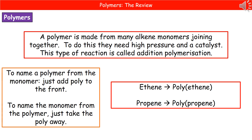If you're asked to ever name a polymer, it's the easiest thing to do in the world. Whatever they've told you the name of the monomer is, write that down exactly as it is but write the word 'poly' in front. If they ask you to name the monomer from the name of the polymer, just take away the 'poly' and copy the rest of the name.